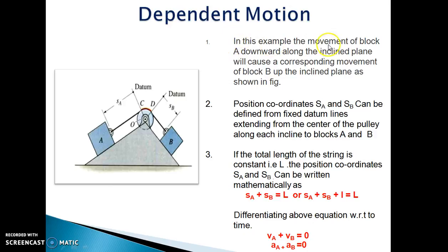In this example, the movement of block A downward along the inclined plane will cause a corresponding movement of block B up the inclined plane, as block A and B are connected by inextensible cable as shown in the figure. In this example, the position coordinates SA and SB can be defined from fixed datum line extending from the center of the pulley along each inclined plane to blocks A and B.